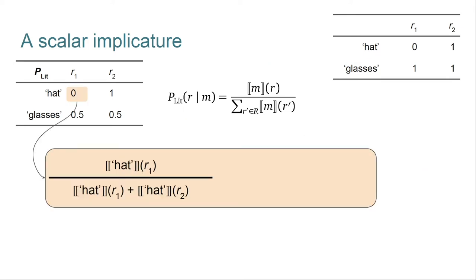Just to make this a bit more concrete, let's walk through the calculation of this value here, the probability of R1 given the message hat. So the definition gives us the expression in the orange box. From there, we just look up the values in the truth conditions. And after substitution, we get 0 divided by 0 plus 1, which of course resolves to 0.